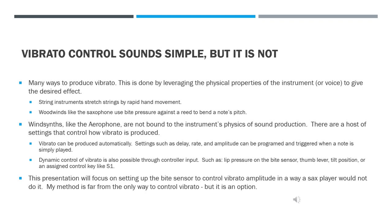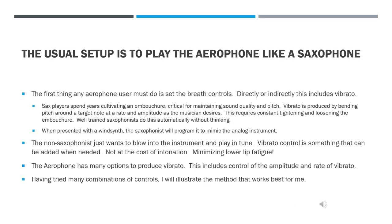Today I'll show you how to set up the bite sensor and tilt to control vibrato amplitude and rate in a way a sax player might not like. The usual setup is designed to make the Aerophone be played like a saxophone, and the first thing any Aerophone user must do is set the breath controls, which directly or indirectly includes vibrato.